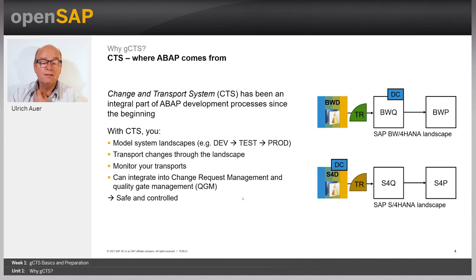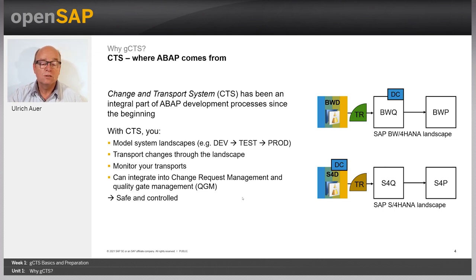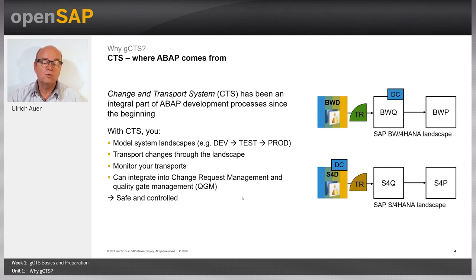From the beginning in 1992, the Change and Transport System was an integral part of the ABAP server. Every change was and is recorded automatically in a so-called transport request. When these transport requests are released, the changed artifacts — development objects and customizing data — are ready for being imported into subsequent systems.